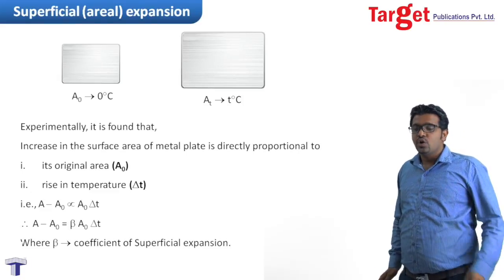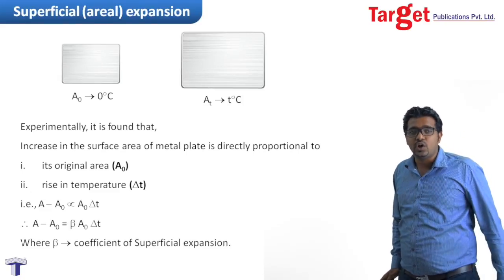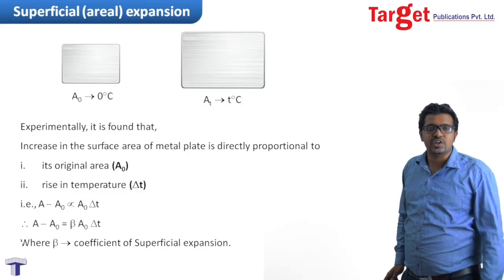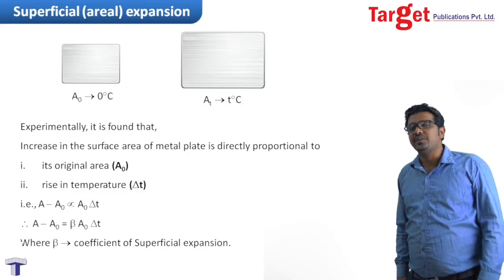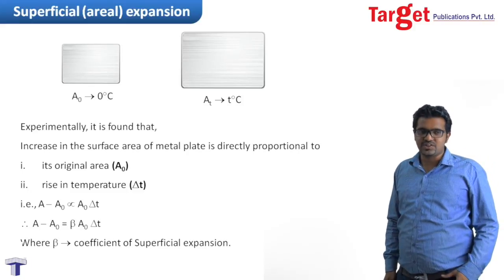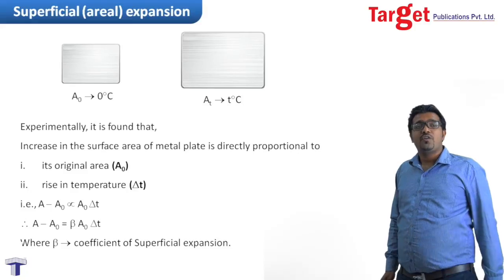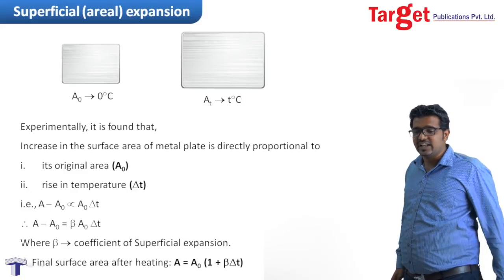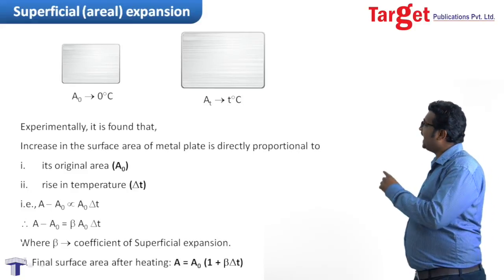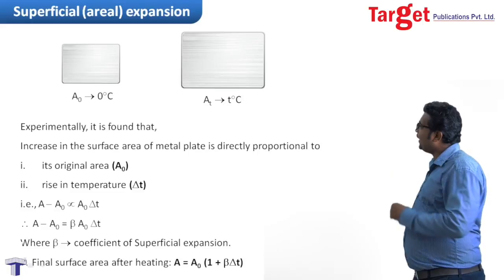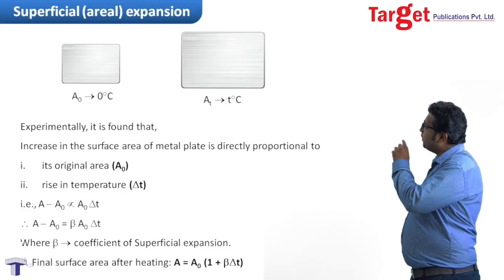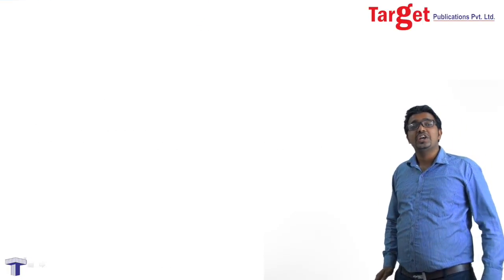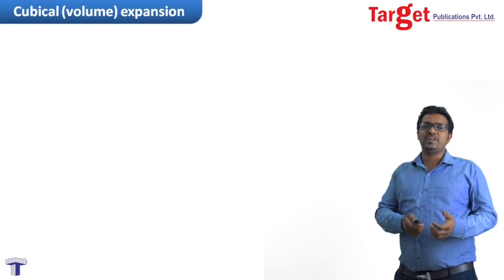Therefore, A minus A₀ is equal to beta A₀ delta T, where beta is the Coefficient of Area Expansion, also known as the Coefficient of Superficial Expansion. The final area after heating is given as A = A₀ + A₀ beta delta T.